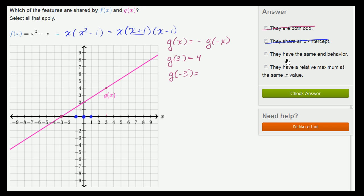They have the same end behavior. Now, this is interesting. This is saying what's happening as x gets really large or as x gets really small. So we could just think about it right over here. As x gets really large, this x³ is going to grow much faster than this x-term right over here.